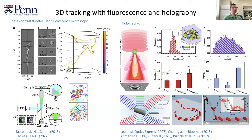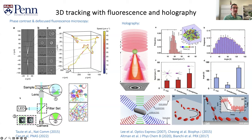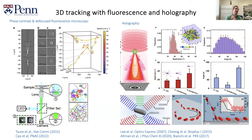It just takes a little bit of time to build up this library and to write a computer program that will compare these rings with later measurements. Another variation is defocused fluorescence microscopy, where again you see fluorescent rings in your camera, and based on the size of the rings, you can back-calculate the position of your bacterium in three dimensions. On the right-hand side of this slide is holography, which is very similar but with some subtle differences.